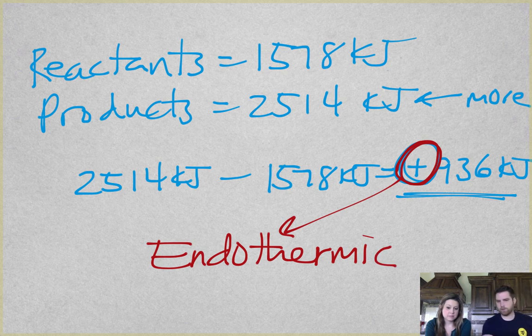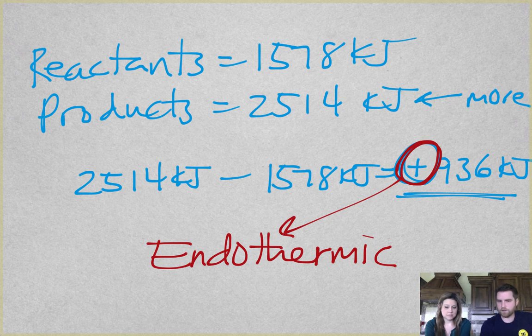It's actually quite easy. You're just doing a subtraction problem. Products minus reactants. If it's negative, exothermic. If it's positive, endothermic. Couldn't be much easier.